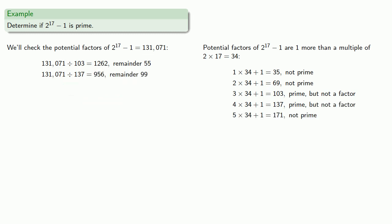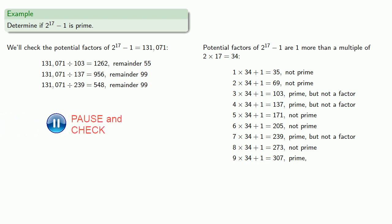5 times 34 plus 1 is 171, which is not prime. 6 times 34 plus 1 is 205, not prime. 7 times 34 plus 1 is 239, which is prime, but when we check it, it's not a factor. 8 times 34 plus 1 is not prime. 9 times 34 plus 1 is 307, but we find it's not a factor.